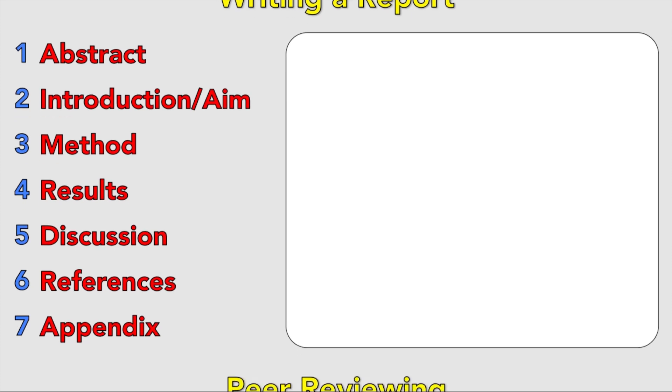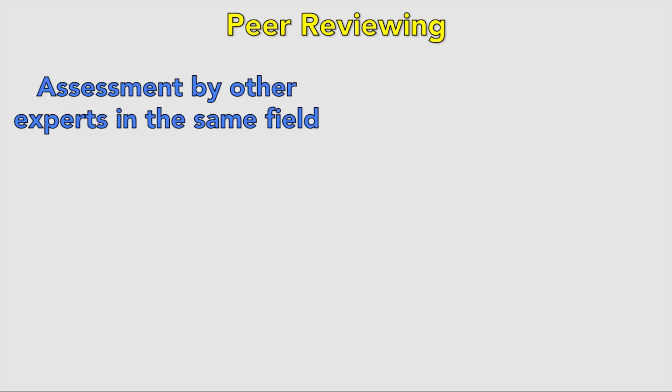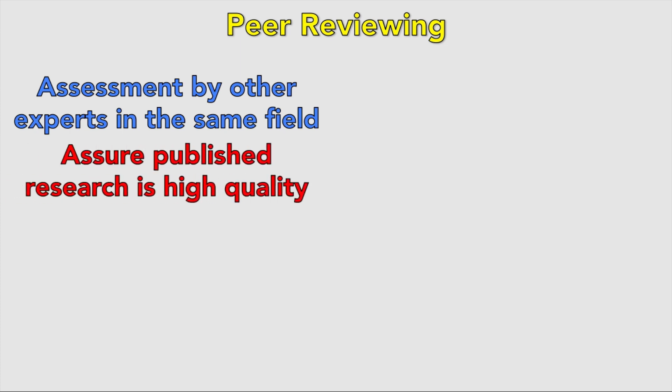On to peer review. Once the study has been completed, your work needs to be peer reviewed. This is where the work is held up for scrutiny so that the work, if it's fraudulent, can be detected and ignored. A peer review is an assessment usually done by other experts in the same field. They are there to assure that the public's research is of high quality, and to prevent bias, the scientists who carry it out are unpaid — usually.